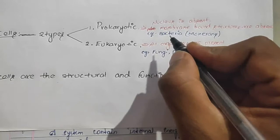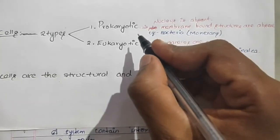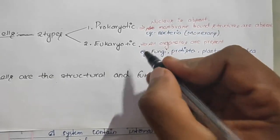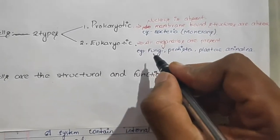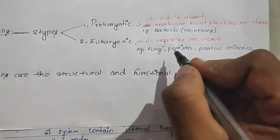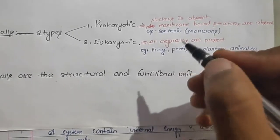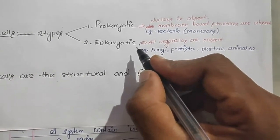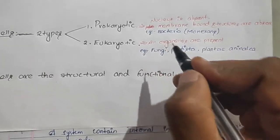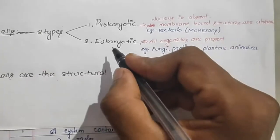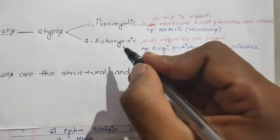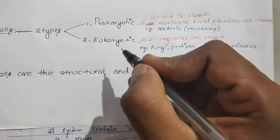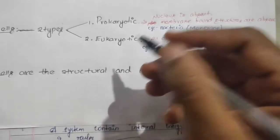Kingdom Monera is the example for prokaryotic cells. The remaining kingdoms — fungi, Protista, Plantae, and Animalia — are examples of eukaryotic cells. In eukaryotic cells, all membrane-bound organelles are present. 'Eu' means advanced, and 'karyotic' means nucleus, so it is an advanced type of nucleus.